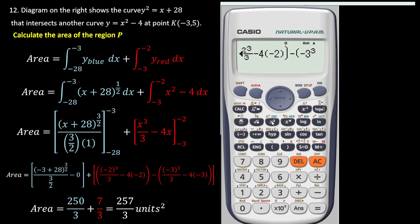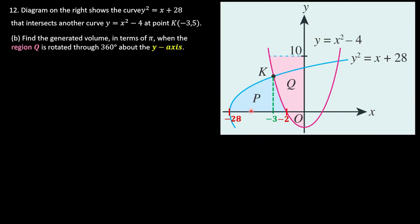For part b, we find the volume generated in terms of π when region Q is rotated about the y-axis.